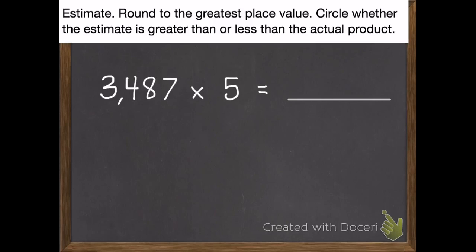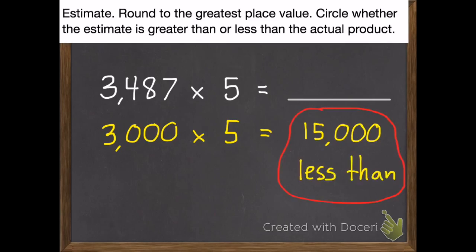Okay. And here's your answer. That will round to 3,000 times 5, which equals 15,000. We rounded down, so this is less than the actual product.